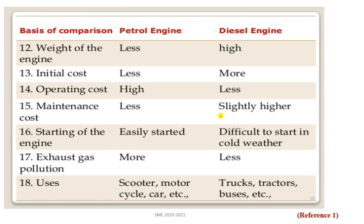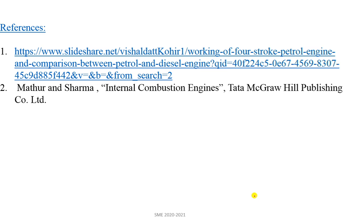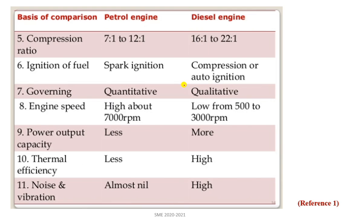Regarding exhaust gases: diesel engines are generally perceived to cause more air pollution, but in reality higher carbon content exists in petrol engines too — this is somewhat debatable and depends on the type of engine and accessories used. In general, diesel engines cause less pollution than petrol, though this can be contested. Uses: petrol engines are used in scooters, motorcycles, and cars; diesel engines are used in heavy-duty applications like trucks, tractors, and buses. References include SlideShare and the book 'Internal Combustion Engines' by Tata McGraw-Hill.